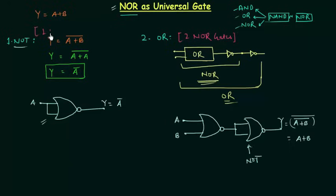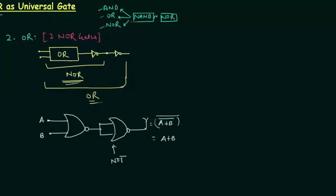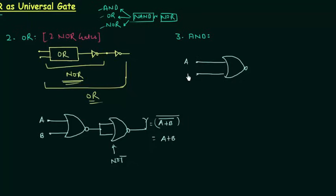The next implementation is the AND gate using the NOR gate. For a two-input NOR gate with inputs A and B, output Y equals (A OR B) complement. Simplifying this using De Morgan's law, output Y equals A complement AND B complement.